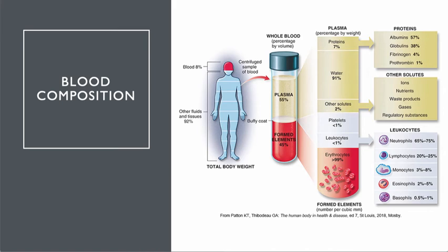The other solutes are the ions that float around — calcium ions, potassium ions, etc. — waste products, gases, etc. Less than 1% of all the content of the blood is composed of platelets and leukocytes. The white blood cells add up to less than 1%. So the largest formed element in the blood is erythrocytes.